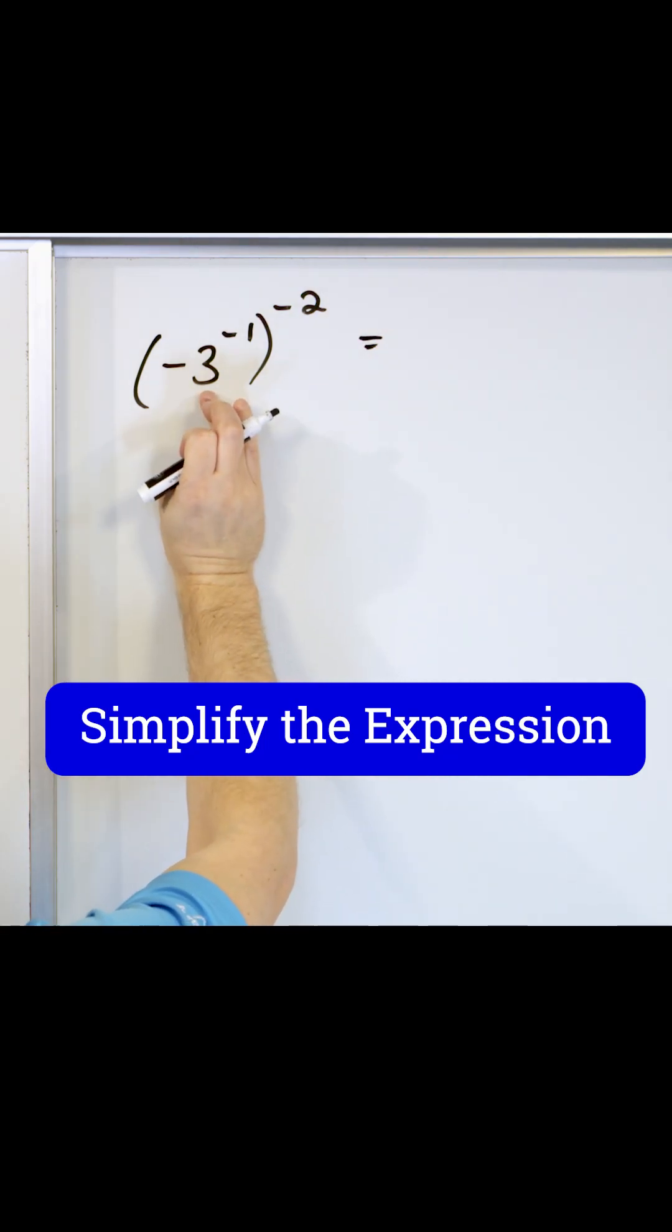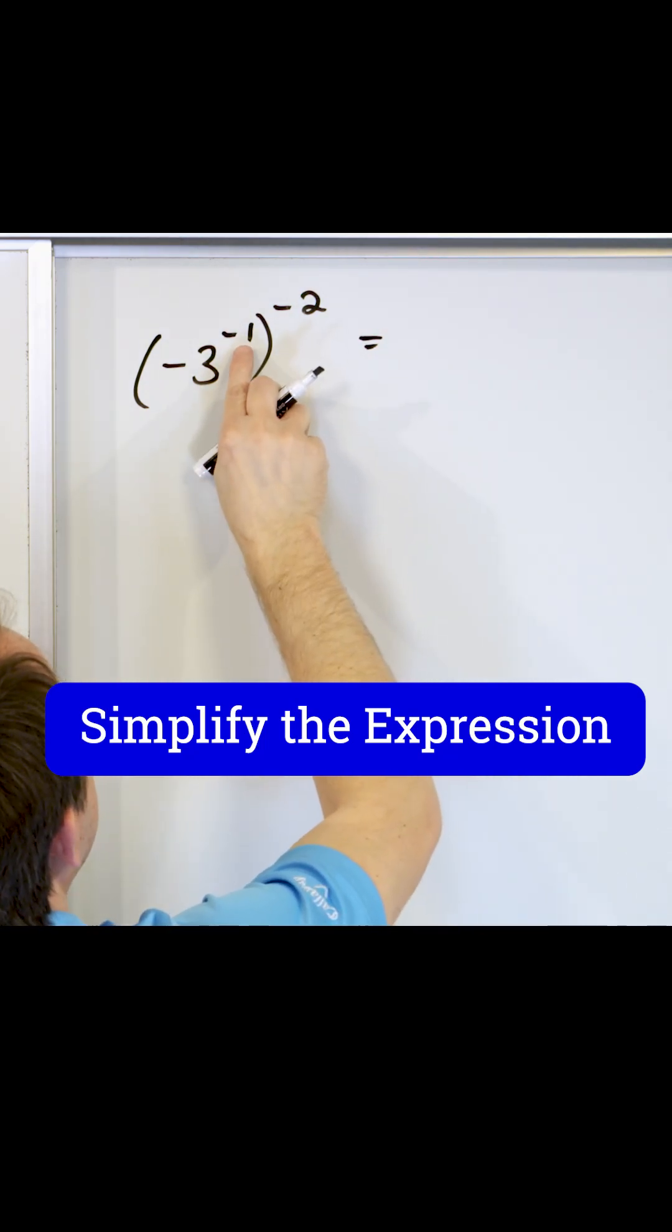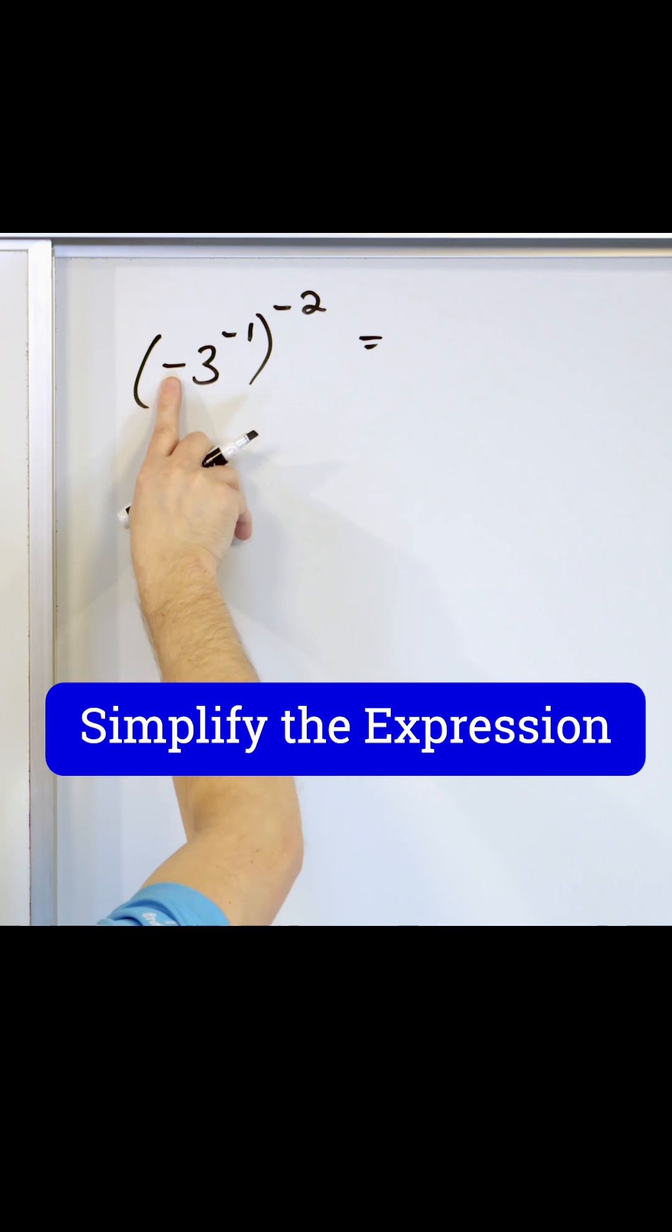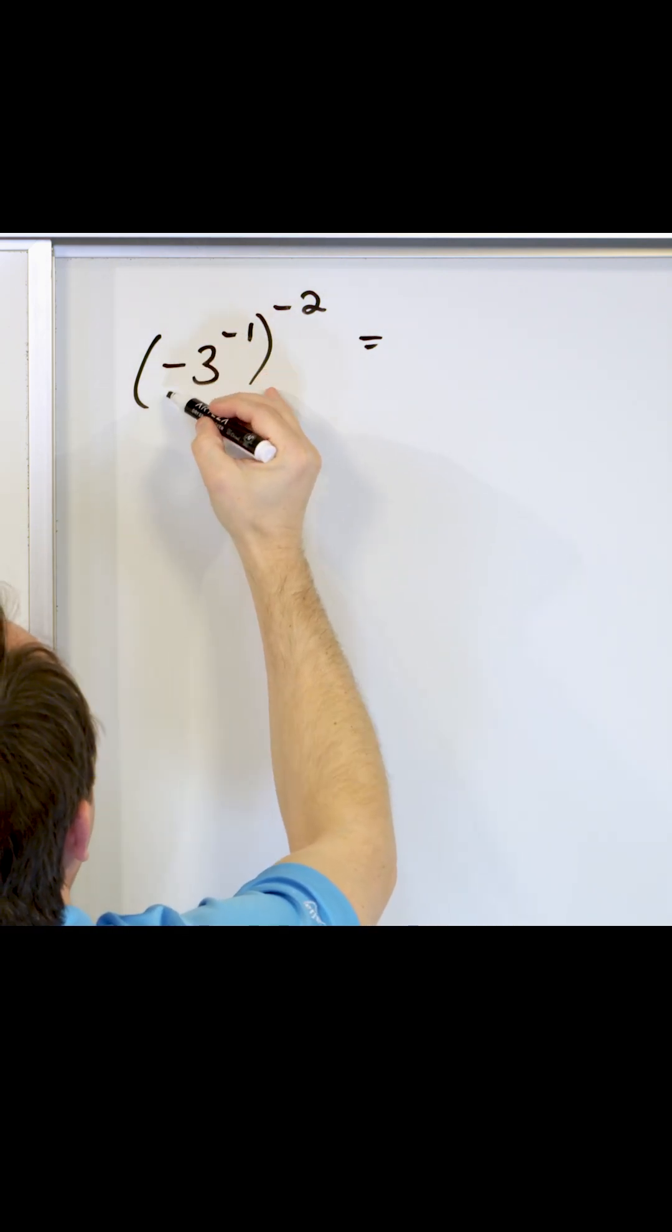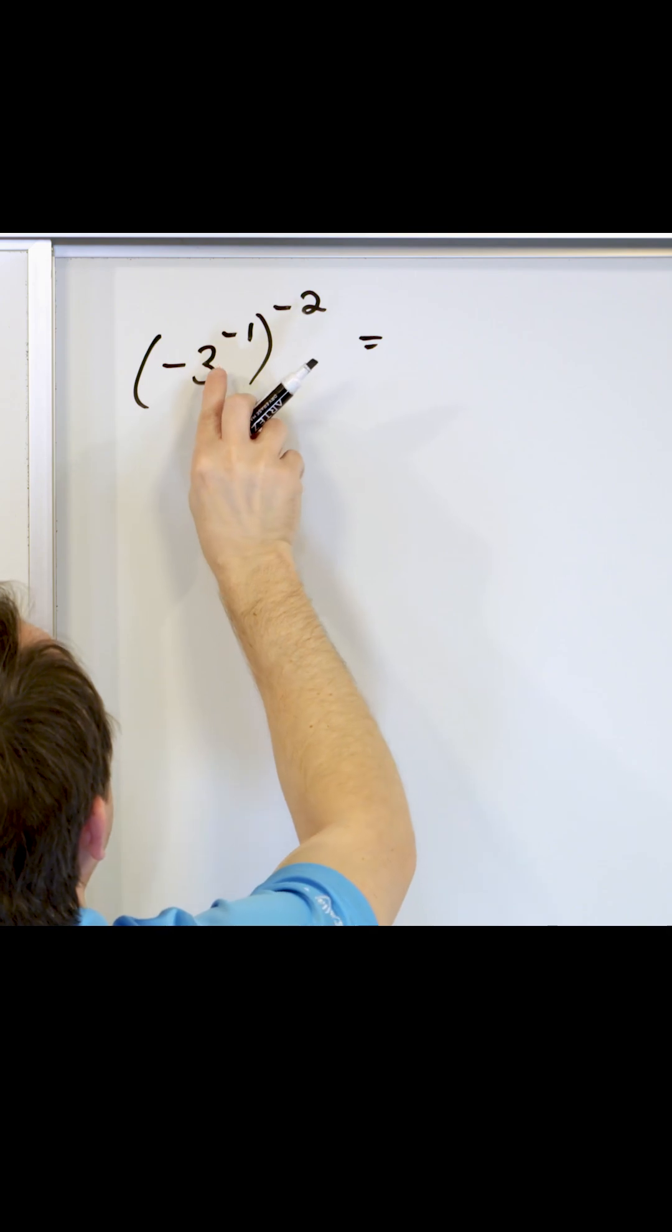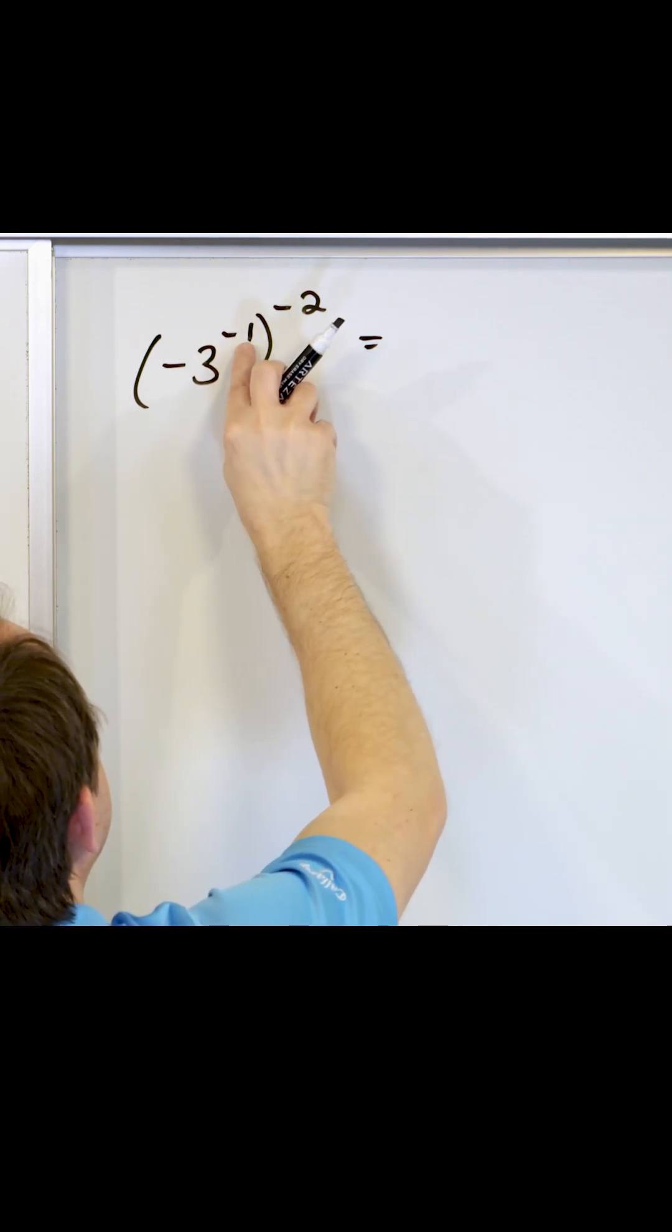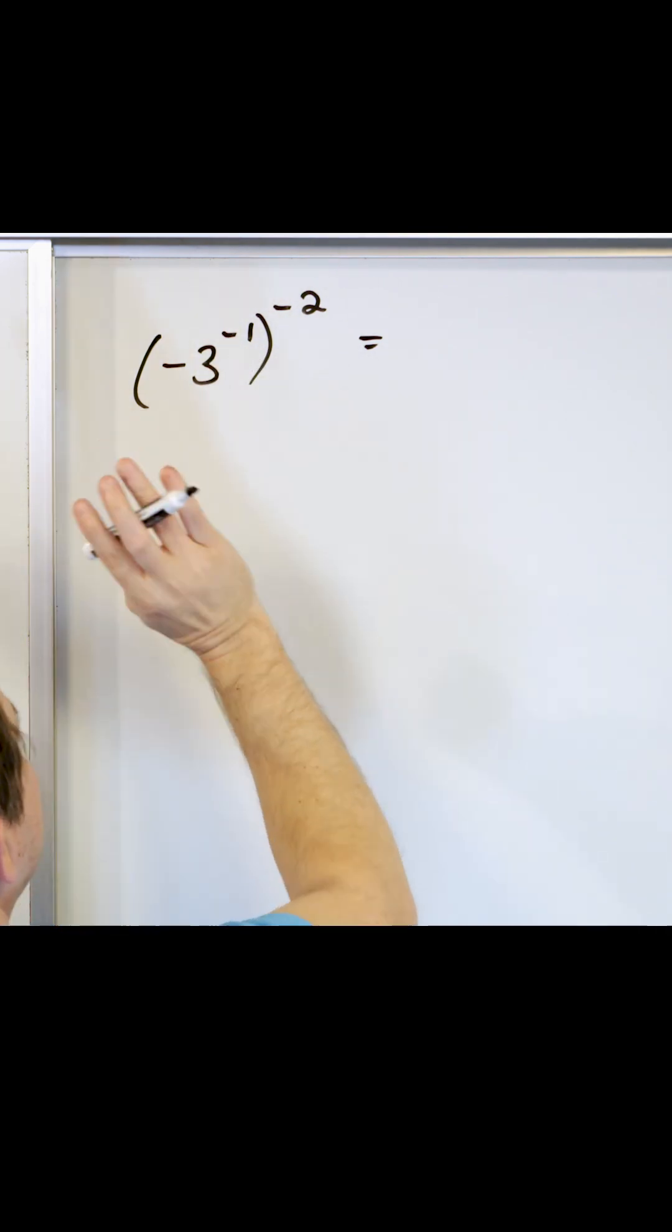We're gonna focus on the inside. We have negative three to the first power. Now this negative one exponent does not apply to the negative sign here because there's no parentheses around it. If I had the whole thing wrapped in parentheses, then it would apply, but when there's no parentheses, the three gets the negative one exponent. This negative just sits outside.